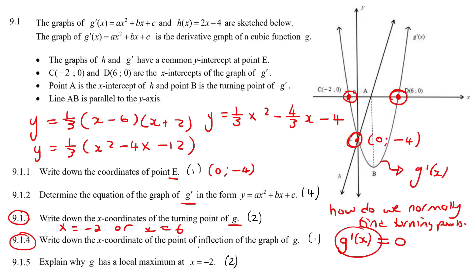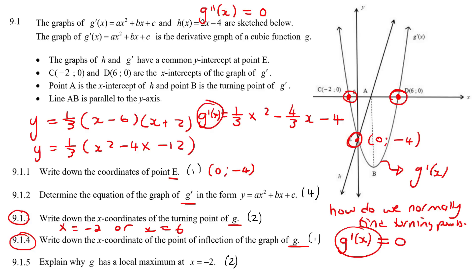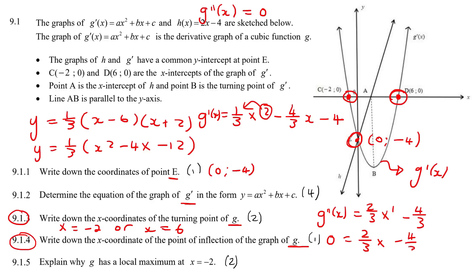Next question: write down the x-coordinate of the point of inflection of g. To find an inflection point we need the second derivative equal to zero. Since our equation is already the first derivative, we differentiate once more: g″(x) = (2/3)x − 4/3. Setting this equal to zero — we can ignore the common denominator of 3 — gives 2x − 4 = 0, so x = 2.